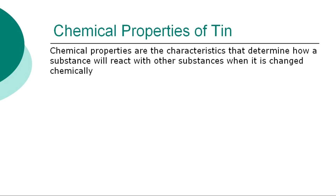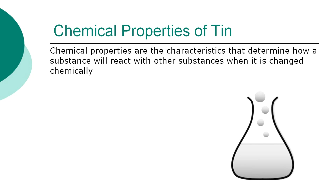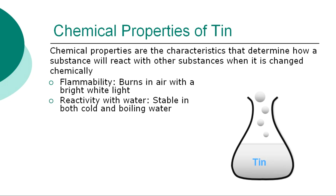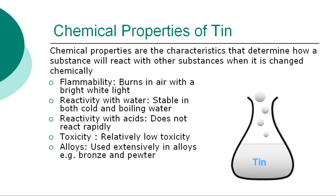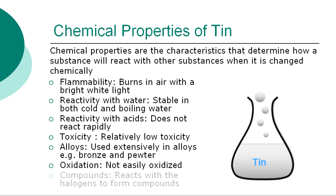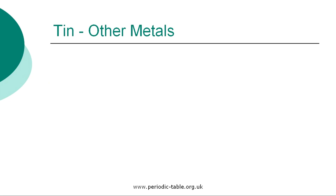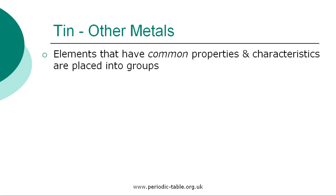The chemical properties are the characteristics that determine how tin will react with other substances. The chemical properties of tin are: Reactivity with water — stable in both cold and boiling water; Reactivity with acids — does not react rapidly; Toxicity — relatively low toxicity; Alloys — used extensively in alloys, such as bronze and pewter; Oxidation — not easily oxidized; Compounds — reacts with the halogens to form compounds.